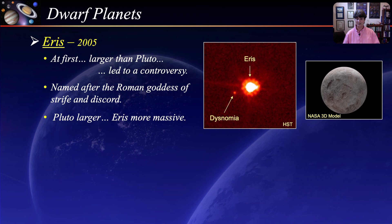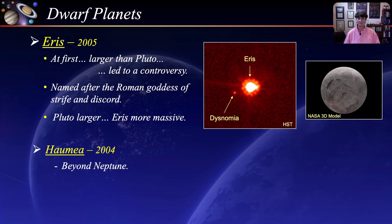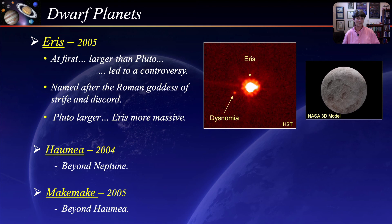Eris is the fourth dwarf planet, discovered in 2004 beyond the orbit of Neptune. Haumea has two moons and a ring system. Makemake is our fifth dwarf planet, discovered in 2005 beyond the orbit of Haumea — it has one known moon and is the second brightest Kuiper Belt object after Pluto.